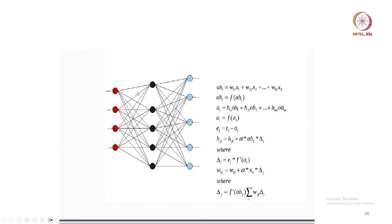Once you have updated the output-layer weights, you have to update the hidden-layer weights. w_kj = w_kj + α × x_k × δj, where α is the learning rate and x_k is the input. Similarly, a_hj is the input to the hidden layer into δj, where δj = f'(a_hj) × Σ(wji × δi). This is the way you update all the weights in your network, so w_kj changes by a small amount in each iteration.